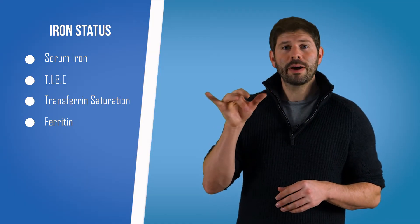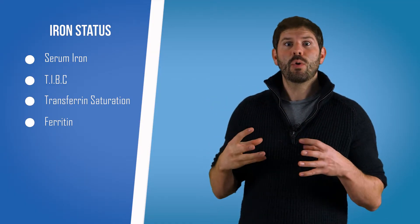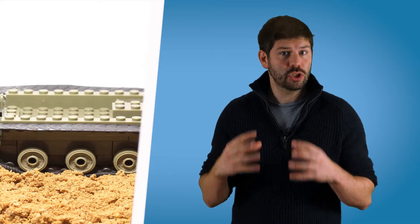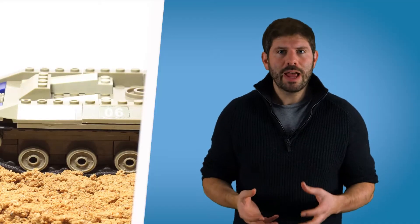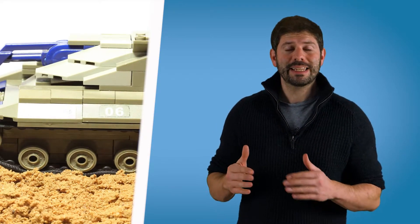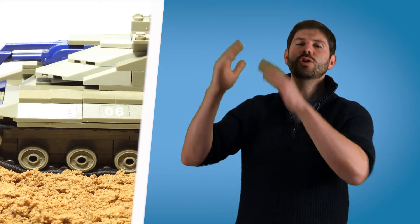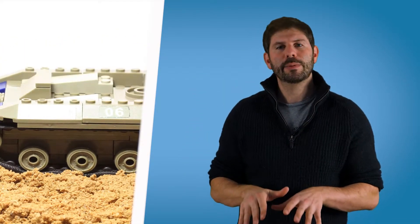Now total iron binding capacity is how well your red blood cells are going to be able to bind that iron and how much capacity they have to do so. If you don't have very much iron in your body, then the total iron binding capacity is pretty high. If you have too much iron, TIBC is a little bit low.